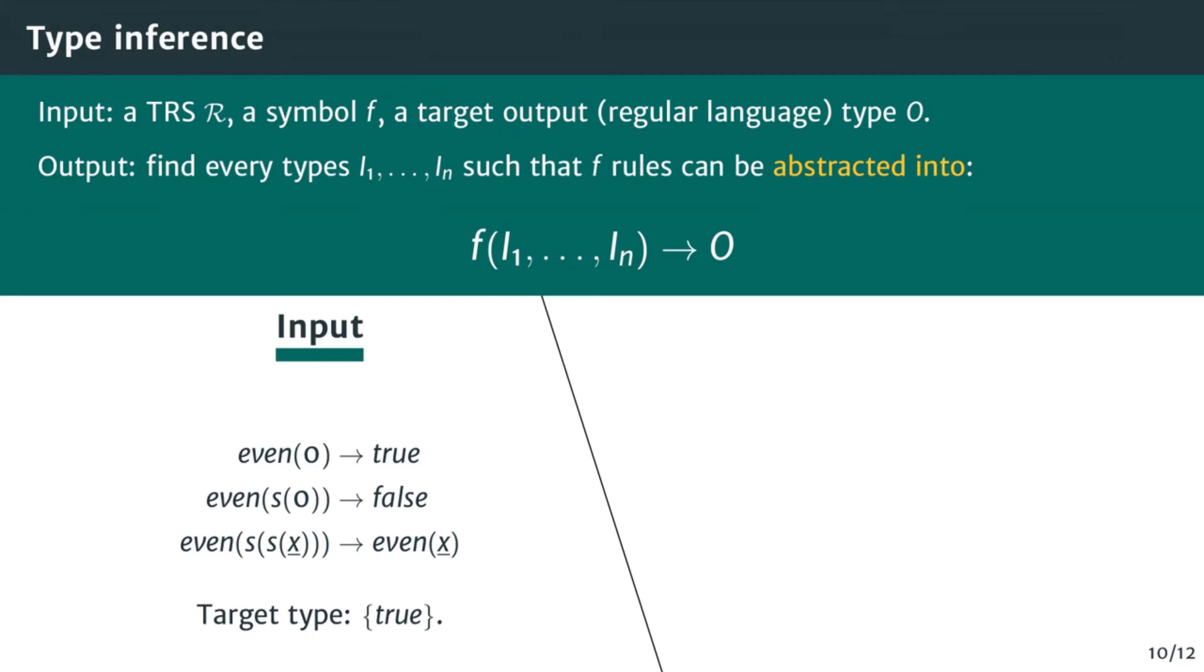For instance, let's consider the following rewriting system, defining the recursive function even, deciding if a number is even or not. We want to know for which input regular language type this function returns true. So here, our target output type contains only true. The expected output of the procedure is a partial abstraction of the input term rewriting system, focusing on even, that tells us that even returns true for every even number. The new type even is computed during the analysis.